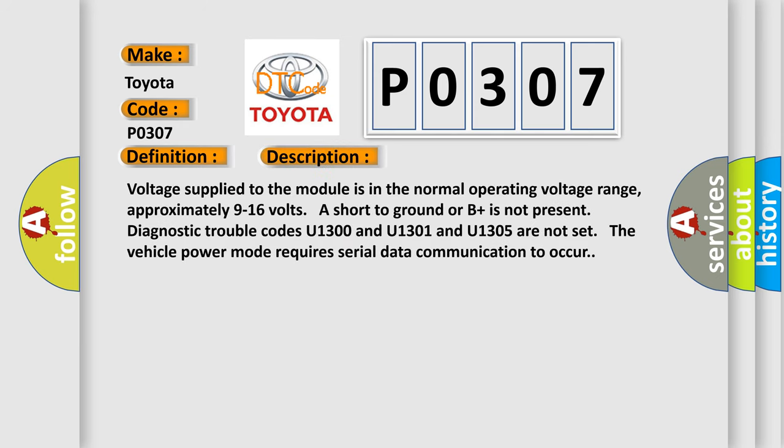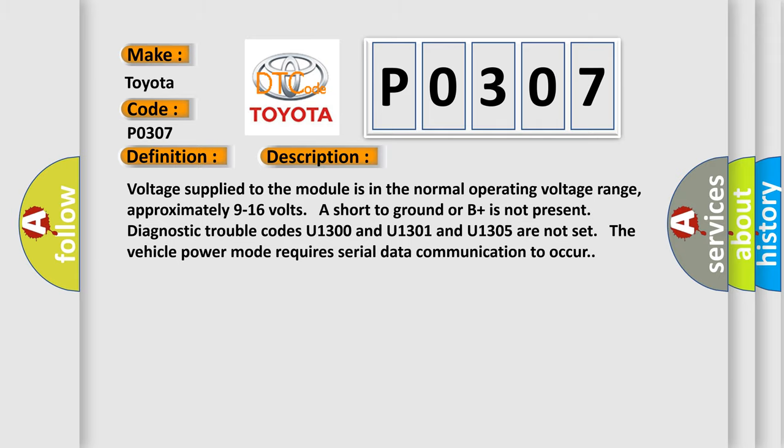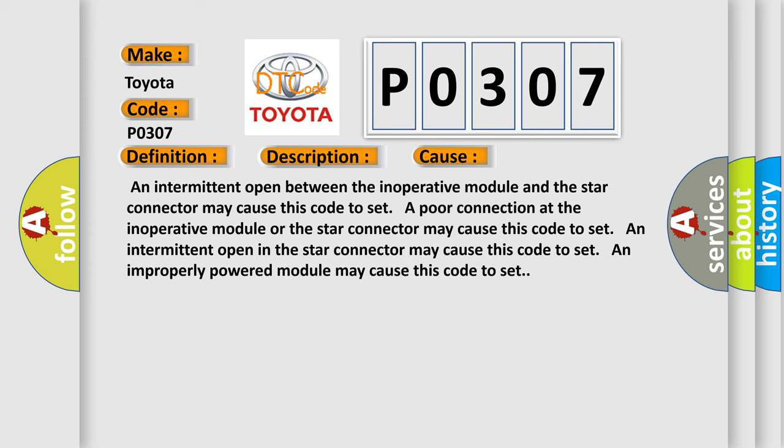Voltage supplied to the module is in the normal operating voltage range, approximately 9 to 16 volts. A short to ground or B plus is not present. Diagnostic trouble codes U1300, U1301, and U1305 are not set. An intermittent open in the star connector may cause this code to set. An improperly powered module may cause this code to set.